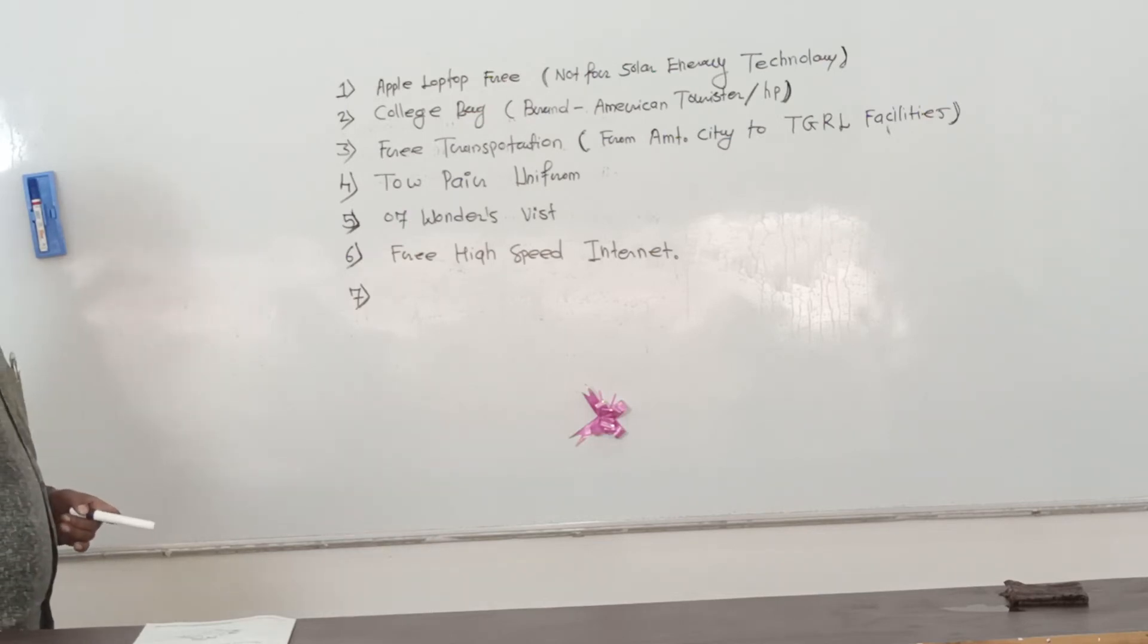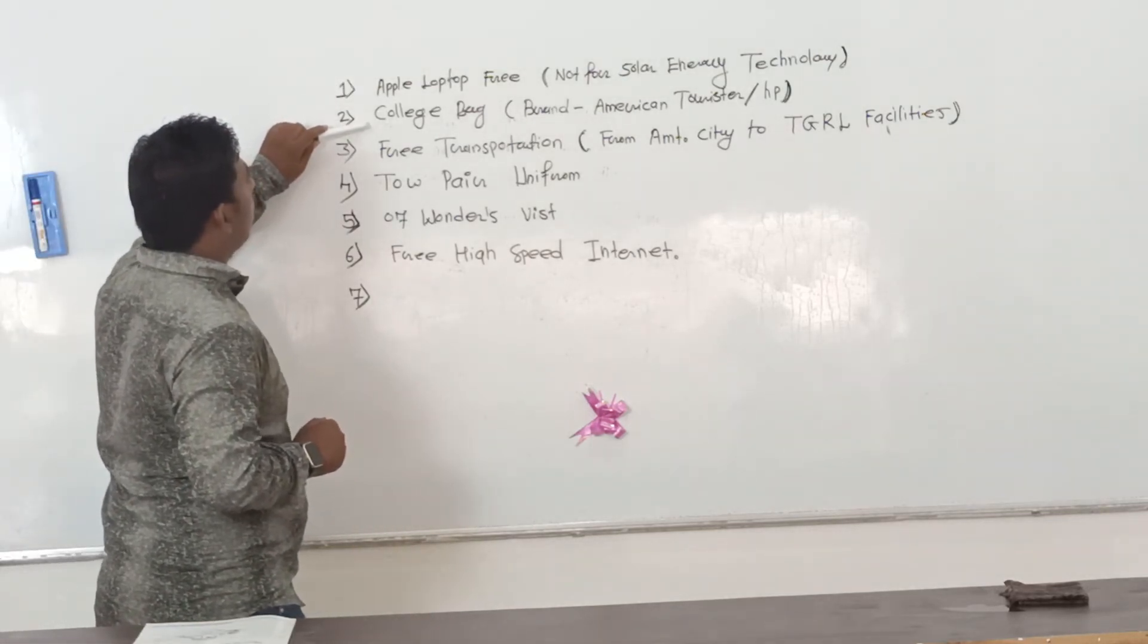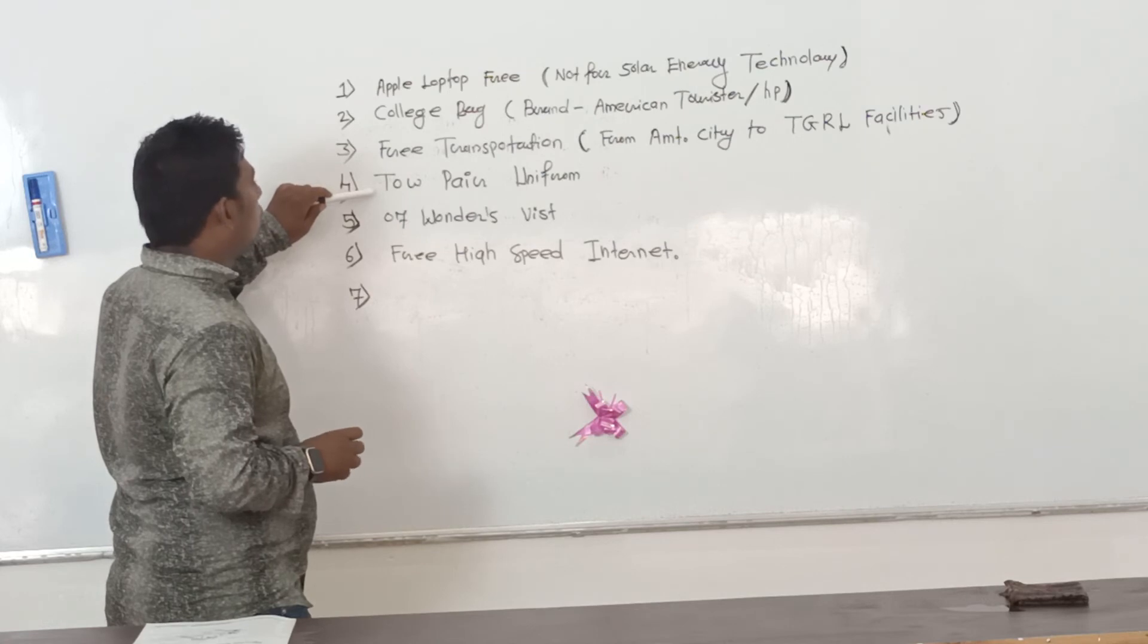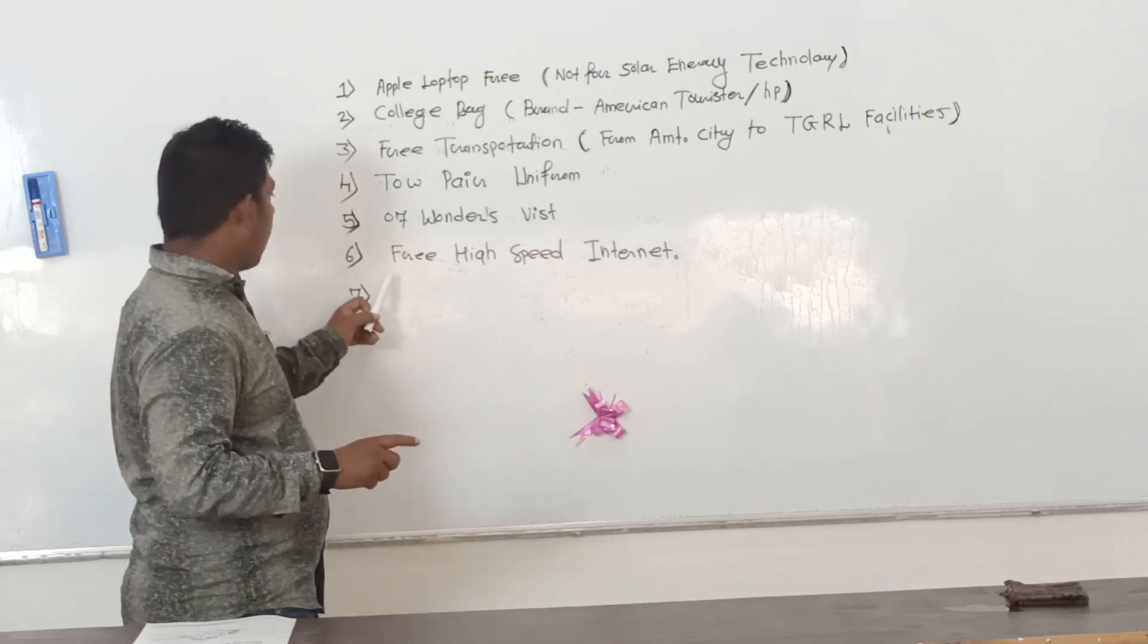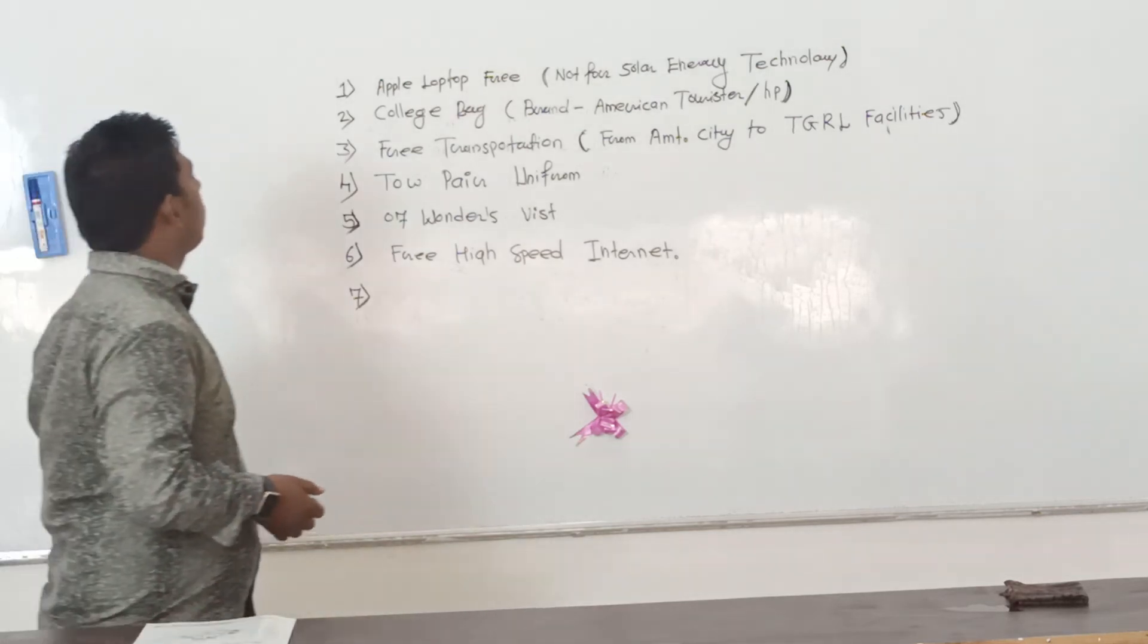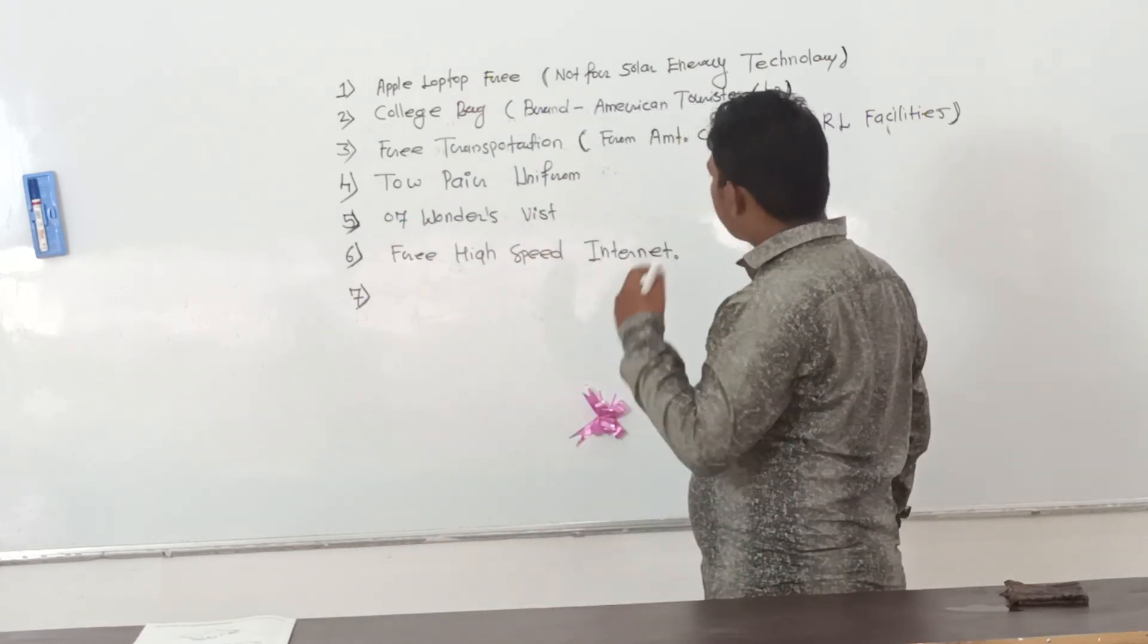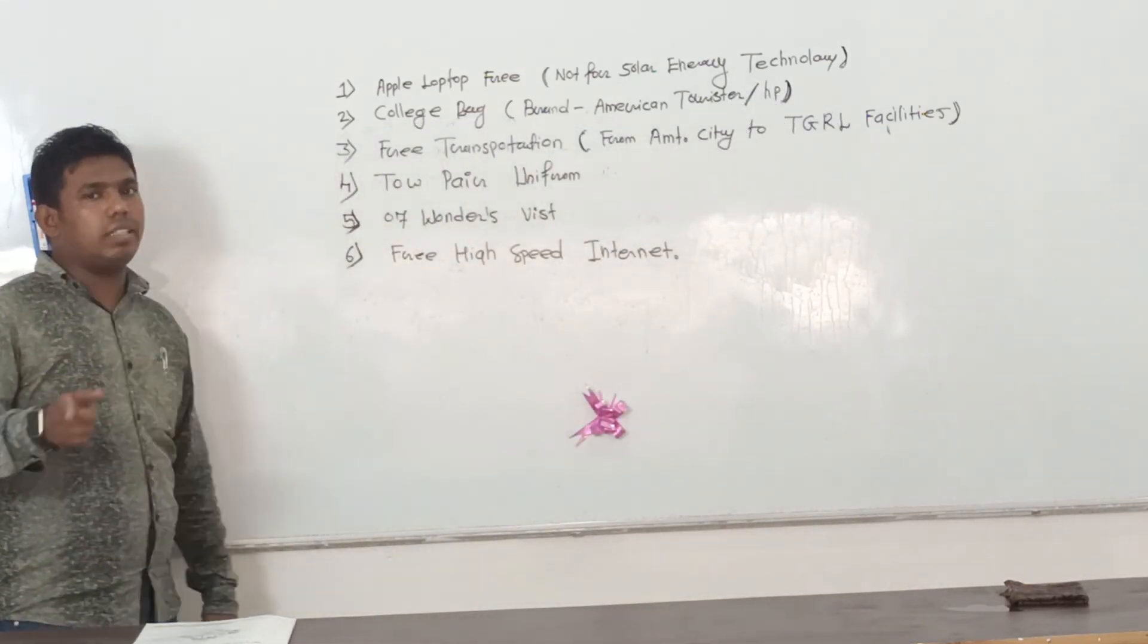One facility is remaining I think so. First one is Apple laptop and second one is college bag. Third one is free transportation and fourth one is two pair uniform and fifth one is seven wonders visit and sixth one is free high speed internet. And the seventh remaining I think so I want to remember, I need to remember. So that's why I think I lost this seventh number thing. Anyway, we are understanding only six things.